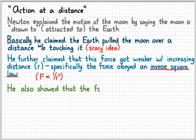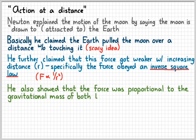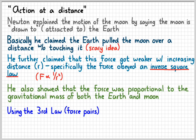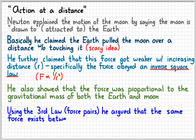He also showed that the force was proportional to both masses of the earth and the moon. Specifically, the gravitational mass of both the earth and the moon. And then, using some third law reasoning, remember that means that forces always occur in pairs, he argued that there should be the same force existing between all objects that have mass.